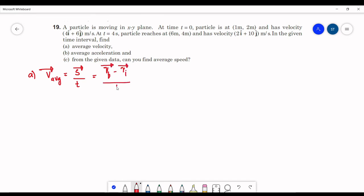Final position vector is 6 i cap plus 4 j cap minus initial position vector i cap plus 2 j cap divided by overall time of the journey, 4 seconds. So this will be equal to 1.25 i cap plus 0.5 j cap.